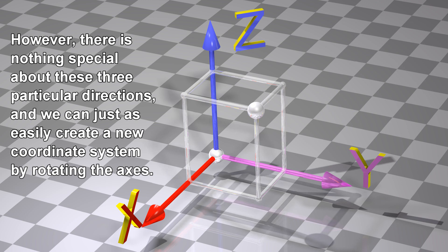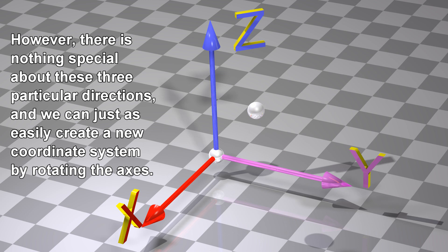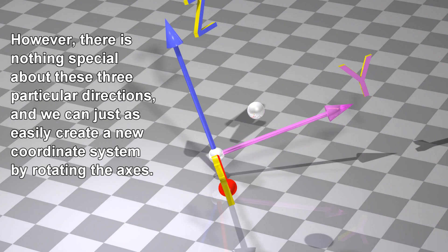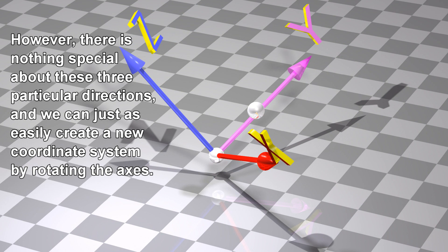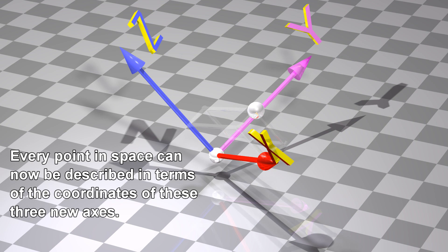However, there is nothing special about these three particular directions, and we can just as easily create a new coordinate system by rotating the axes. Every point in space can now be described in terms of the coordinates of these three new axes.